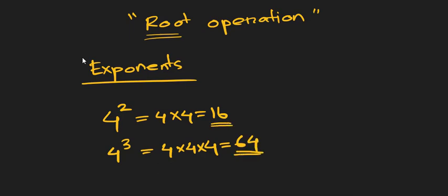From our exponent operation we know that 4 is the base, 2 is the exponent, and 16 is the result. In root operation, if I write 4 squared, the question is how many times we have to multiply 4 to get the result.